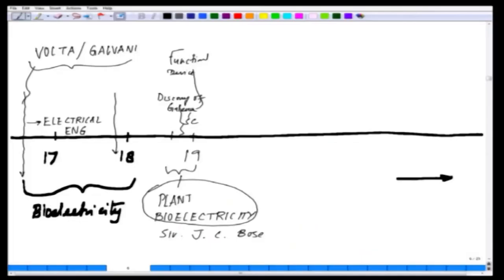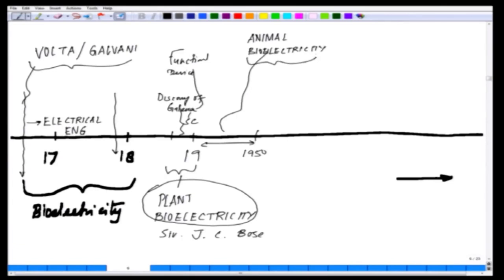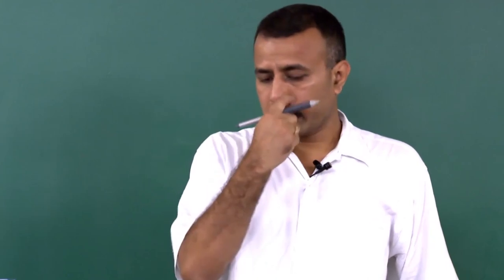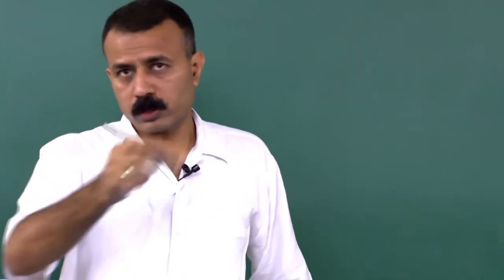From 1900 to 1950, enormous work happened across Europe on animal bioelectricity. Some of the hallmark discoveries included the discovery of action potential by Hodgkin and Huxley, along with several other people whose contributions are equally significant. I am just trying to build up the story of how patch clamp came into being. Even Hodgkin and Huxley used sharp electrodes — a sharp electrode inserted into the cell making recordings using a voltmeter or amplifier.